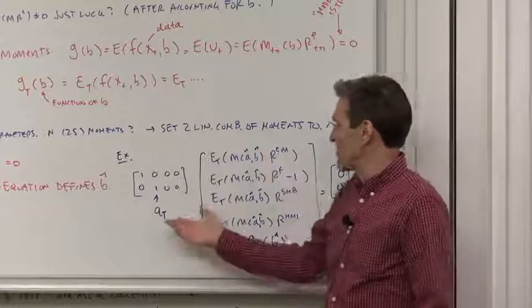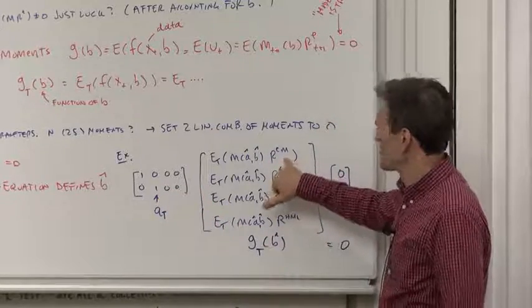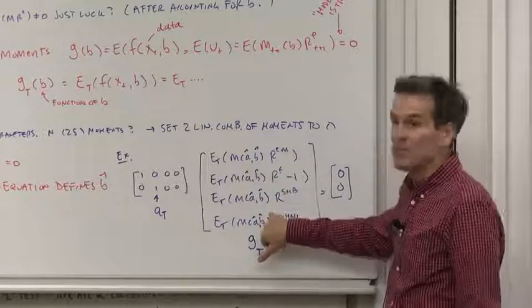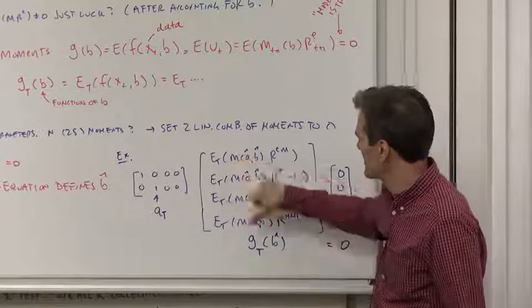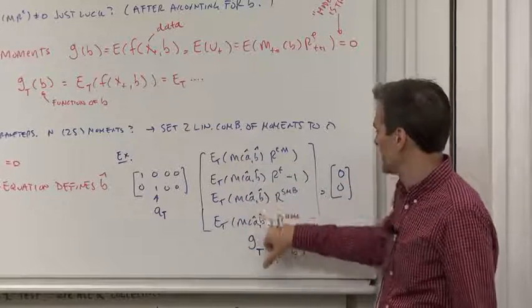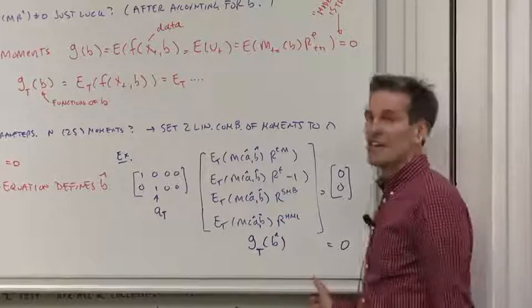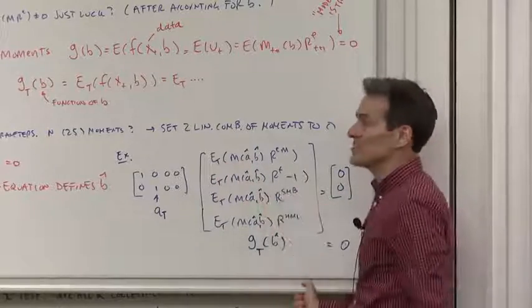I chose an interesting one. I'm allowed to do anything I want. I chose, why don't we set the market return exactly to zero, the risk-free rate exactly to zero. Then we'll reserve these two moments. We can use those to test and see how well, after we've estimated these parameters, how well does the model do on setting those equal to zero. That's an example of how a GMM estimate can find the parameters you want, and later, how we're going to do the testing.